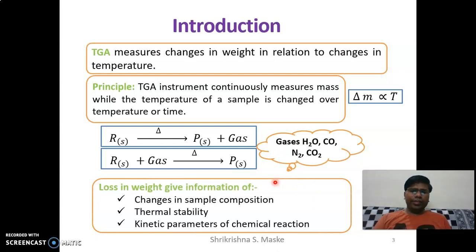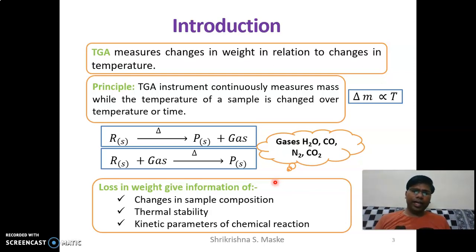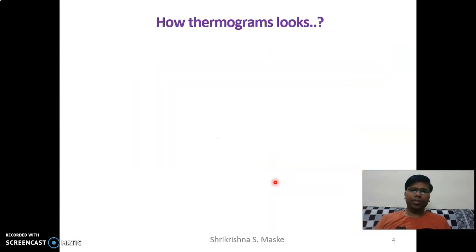Loss in weight gives information about changes in sample composition. We can also check thermal stability — meaning up to which temperature your sample is not evolving or absorbing any gases, indicating no change in the sample up to a certain temperature. We can also check kinetic parameters of chemical reactions. We will see all these things in the application part of this chapter.